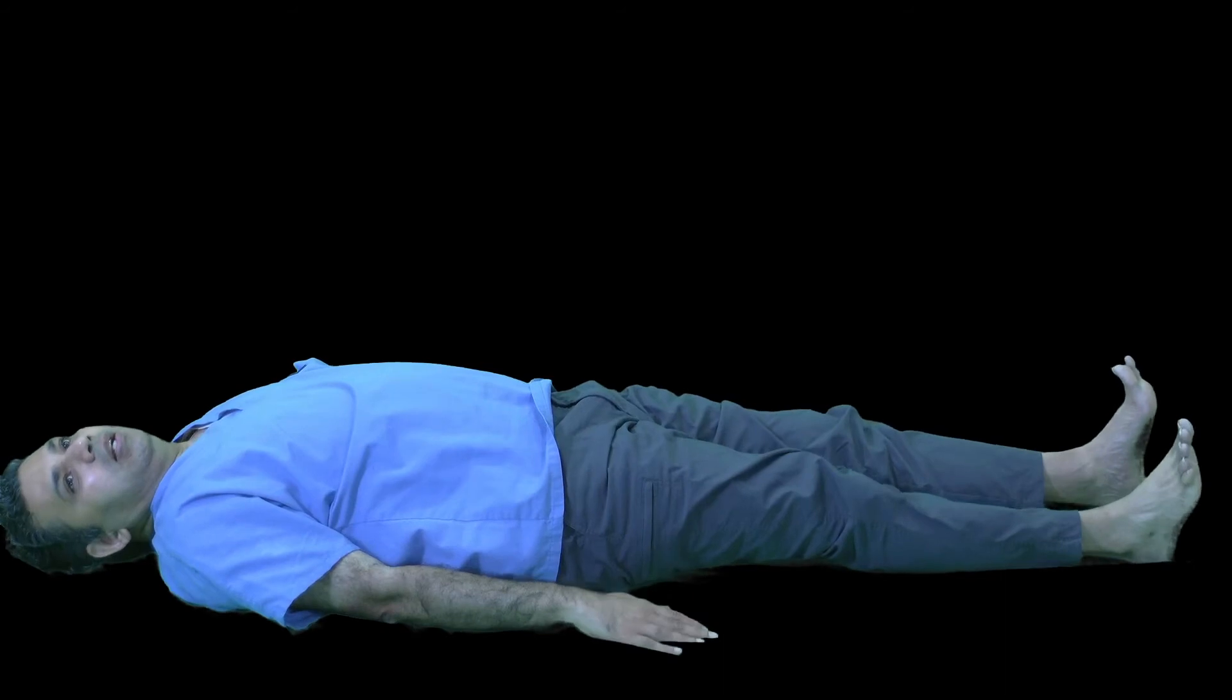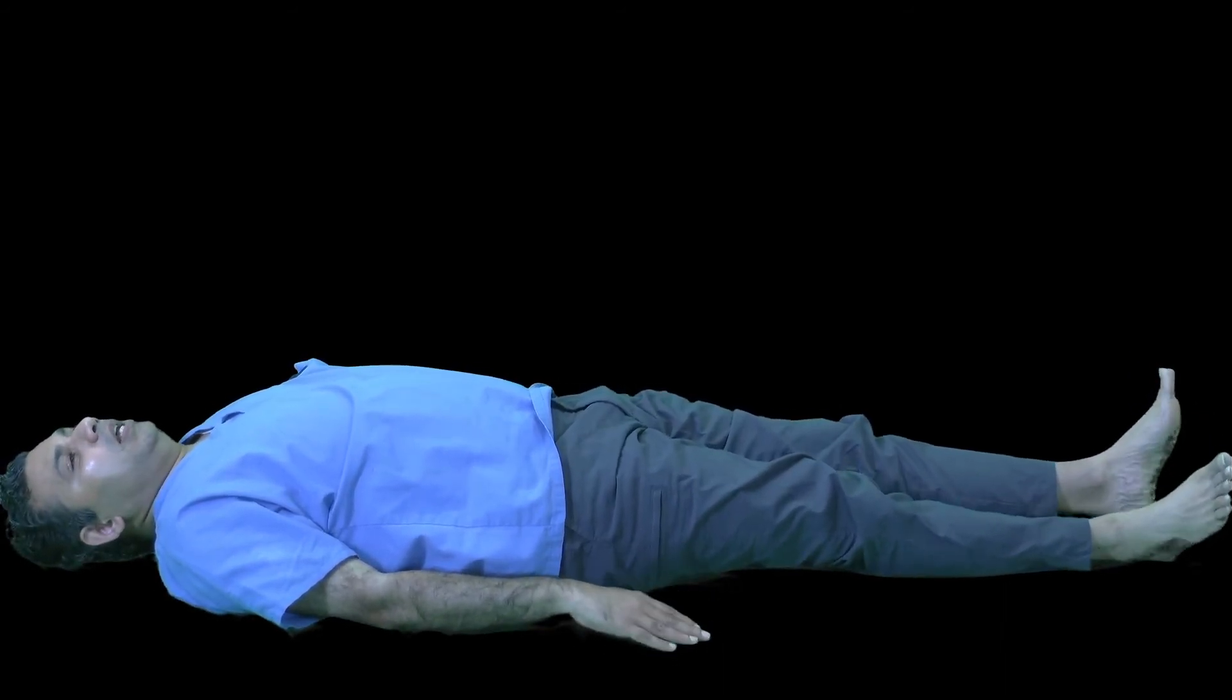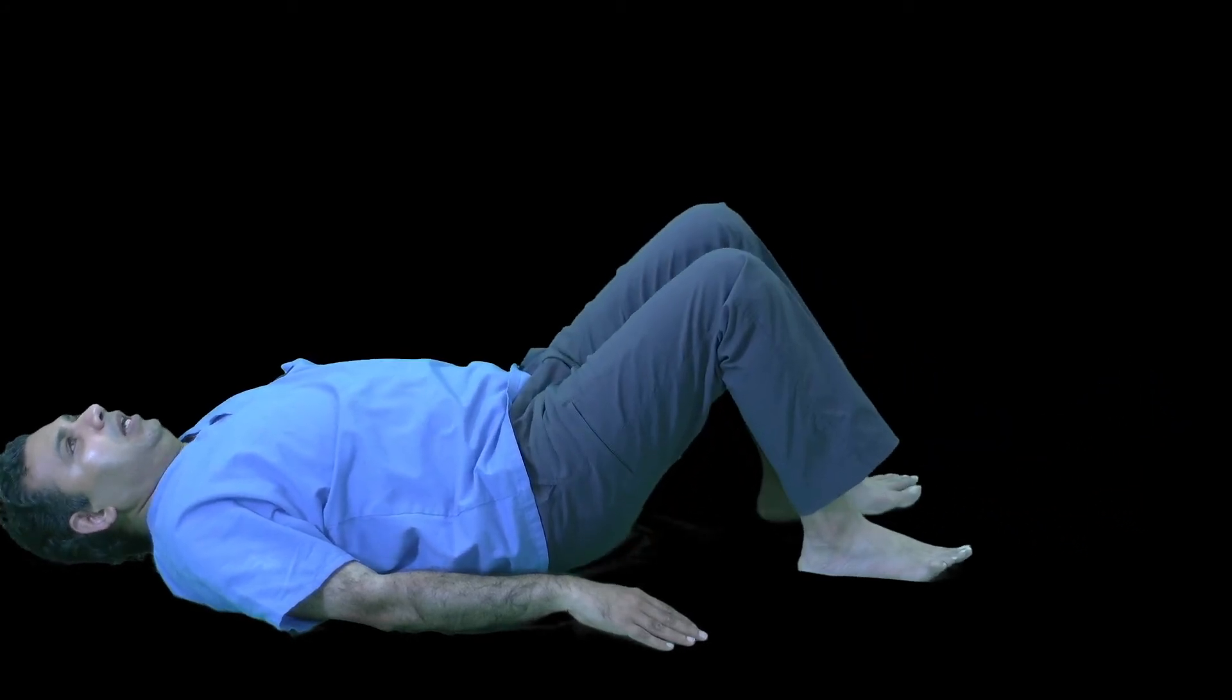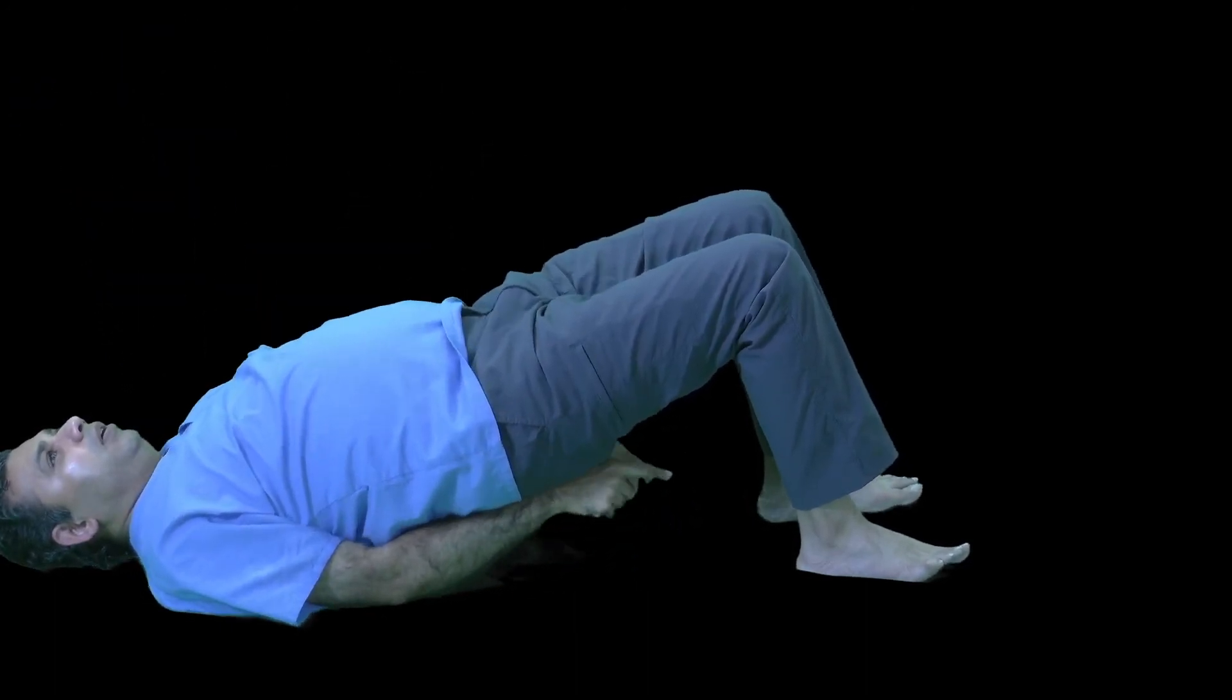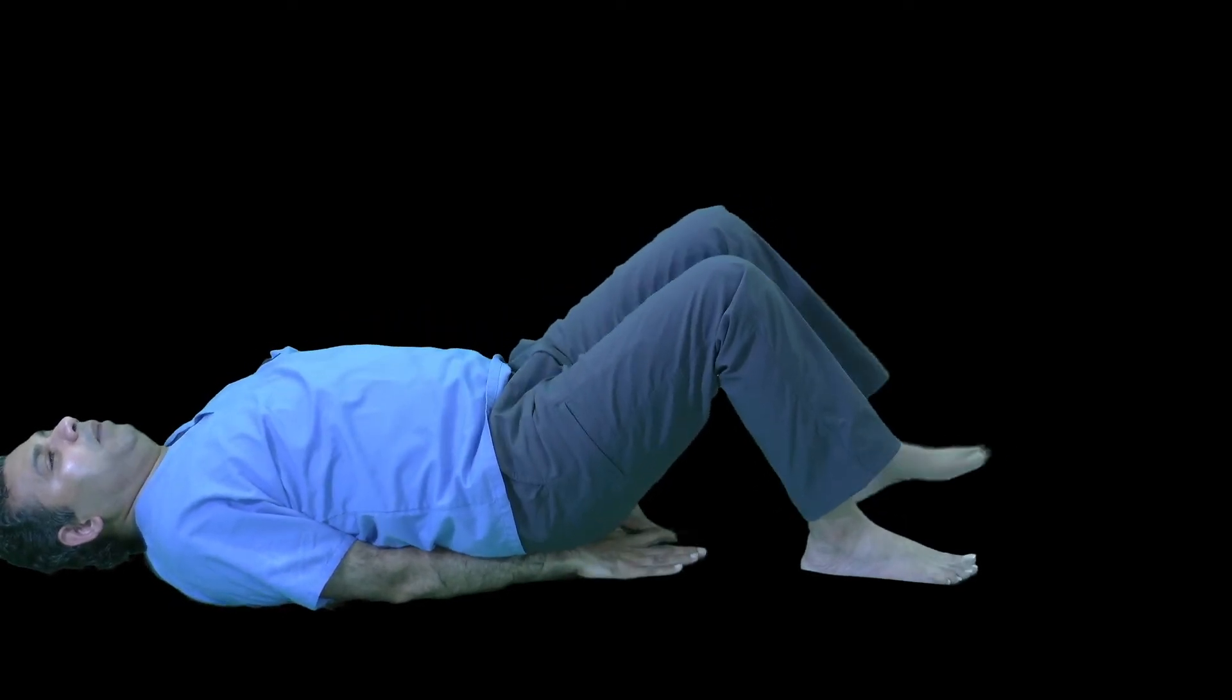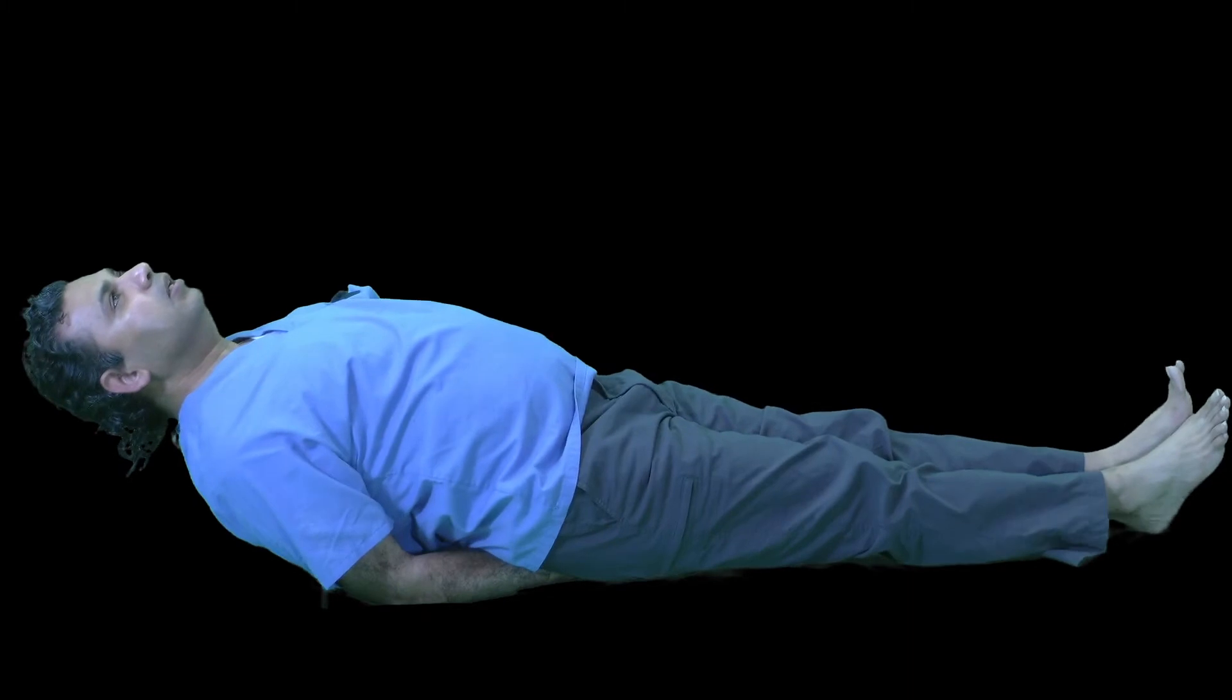For this, lay down flat on a stable surface, preferably a firm surface. Then you go into a bridge position: bend your knees, lift your hip up, and then interlock your thumbs behind your hips and let it drop and make it flat.